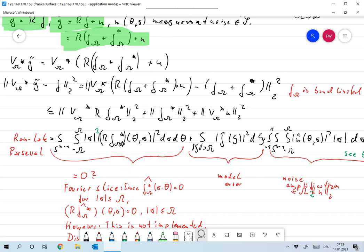f_omega star contains the frequencies of f beyond omega, so from Fourier slice we have that also in this case Rf_omega star contains no frequencies below omega. This is zero on the range of minus omega to omega, so the whole thing over here is zero.